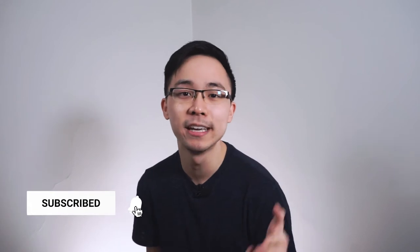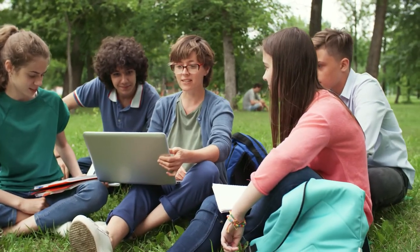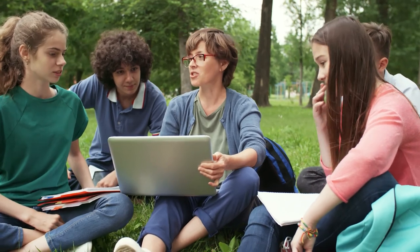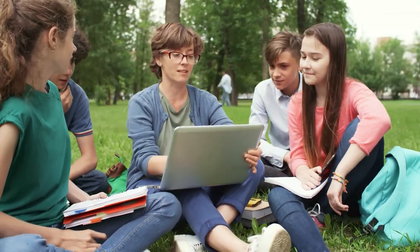Step number five is to consider joining or forming an AP Human Geography study group. It can be super helpful to not study alone, because a collective group can make it easier to focus on just a particular section or topic. We recommend getting a study group that you can meet with on a regular basis — weekly, bi-weekly, or monthly, depending on whatever works for your group. The purpose of this time should be to review different things that some of you may not have fully understood the first time around, and to potentially teach it to each other so that you can truly retain the information.